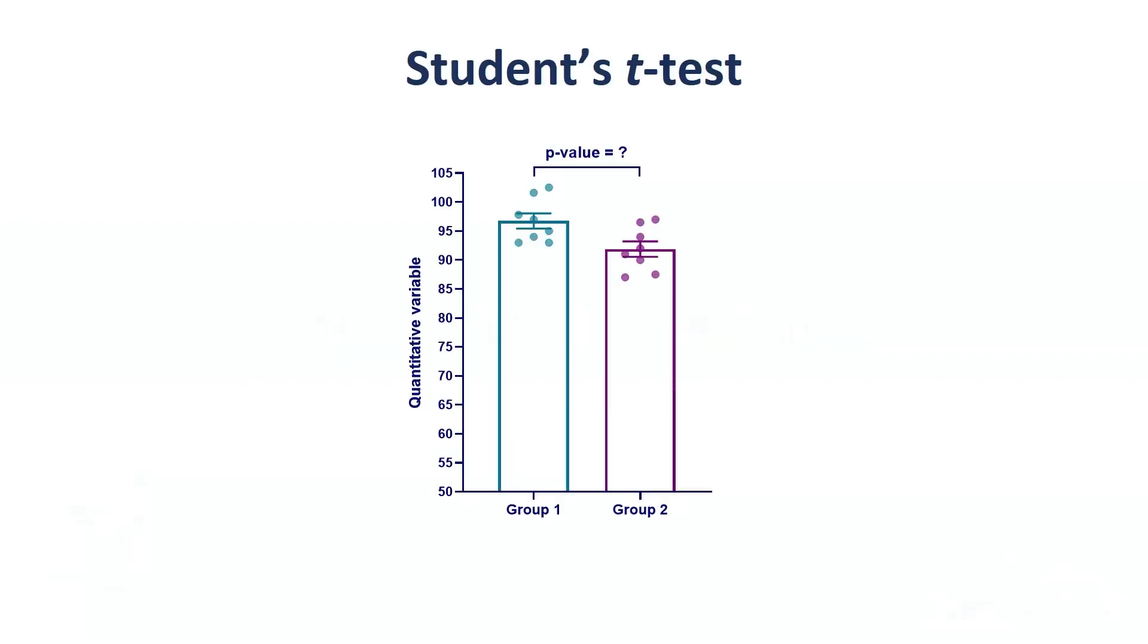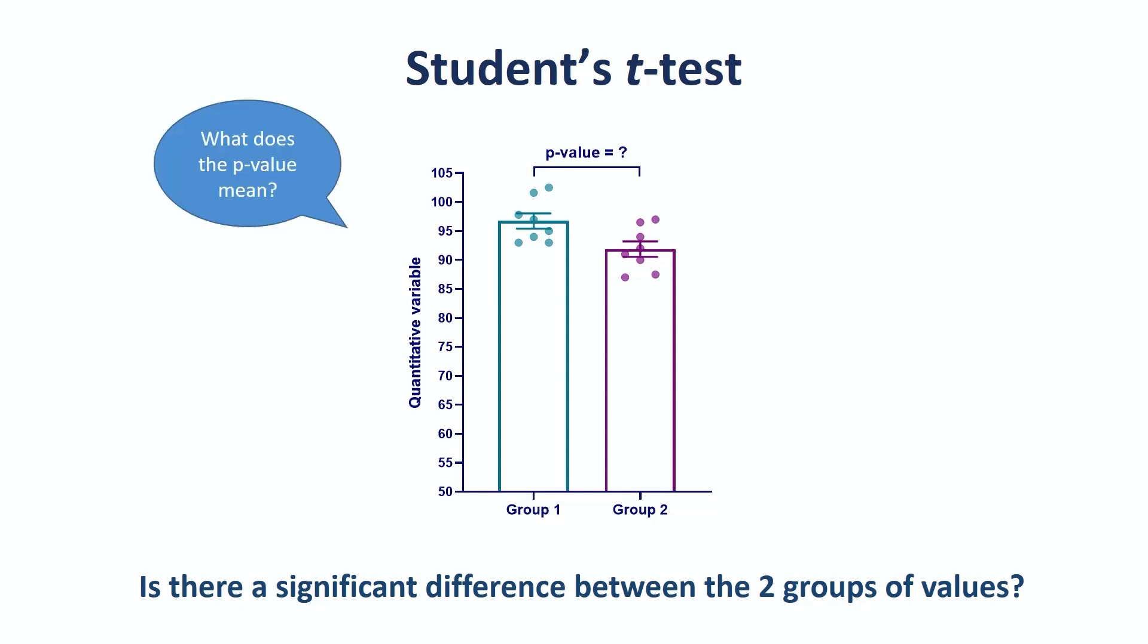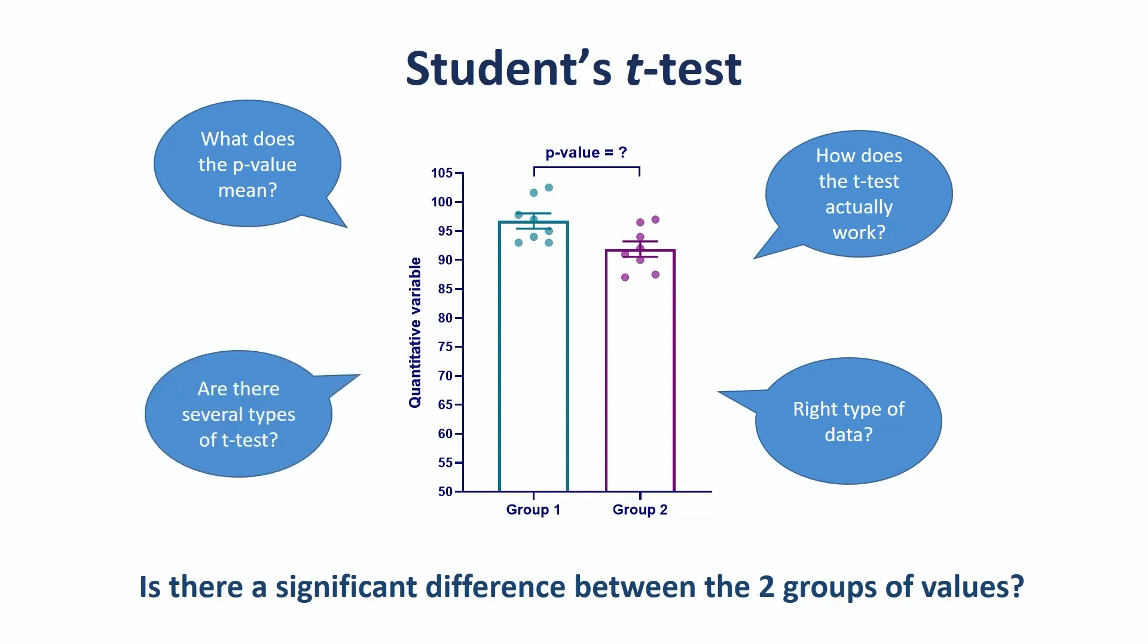In a nutshell, we use a student t-test when we want to know if there is a significant difference between the means of two groups of values. But what does significant mean? It has to do with the p-value, but what does the p-value actually mean? And can we use it on whatever data? If not, how can we check our data are okay? And how does the t-test work? And is there only one type of t-test? That's a lot of questions. Let's start from the beginning.